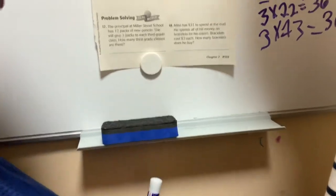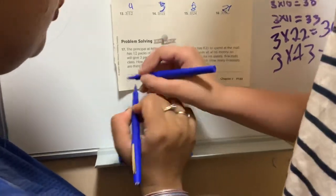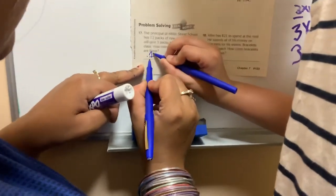How many third grade classes are there? How many third grade classes are there? So what do you have to do? 12. You have to do 12 divided.